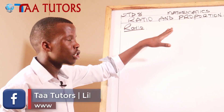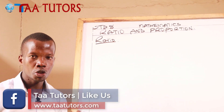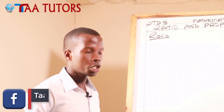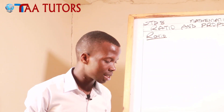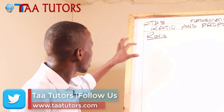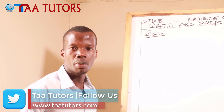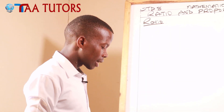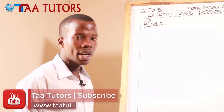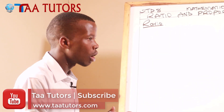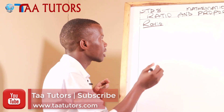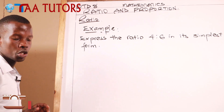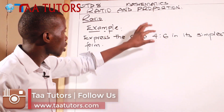Today we want to talk about the topic ratio and proportion. Under ratio and proportion, let's start with ratio. We did ratio in class 7, but here in class 8 we are also going to tackle ratio. First, let's talk about how we can simplify a ratio. Let's look at an example - we want to simplify the ratio.